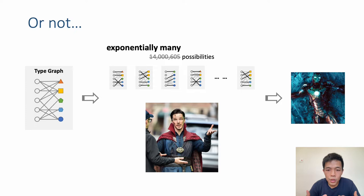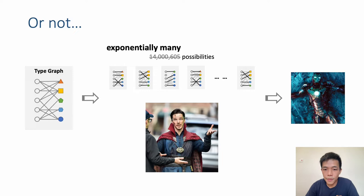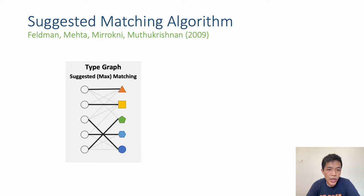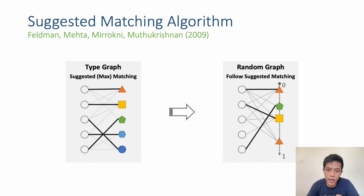That is why in the literature of online stochastic matching, algorithms usually exploit the stochastic information by solving an LP relaxation to obtain a fractional matching between offline vertices and online types, then design a rounding algorithm to utilize this fractional matching in the online process. The simplest algorithm demonstrating this idea is the suggested matching algorithm by Feldman et al. in their original paper, used as a warm-up. It first solves the optimal matching in the type graph, and then whenever an online vertex arrives, it checks what its type is matched to in the type graph and tries to do the same.